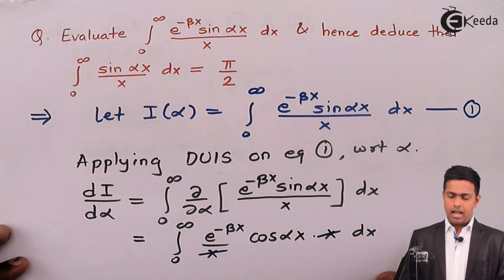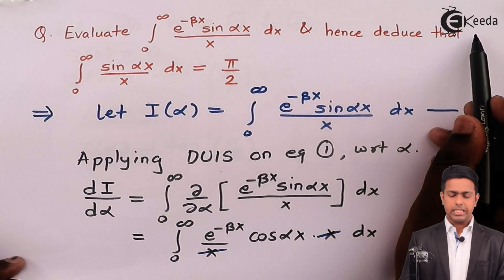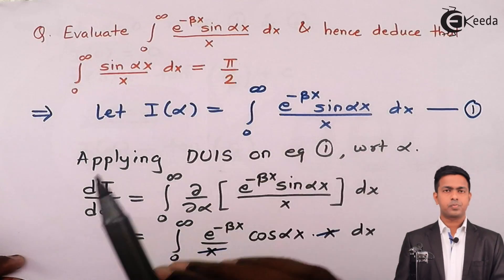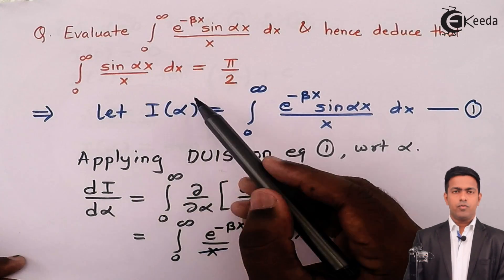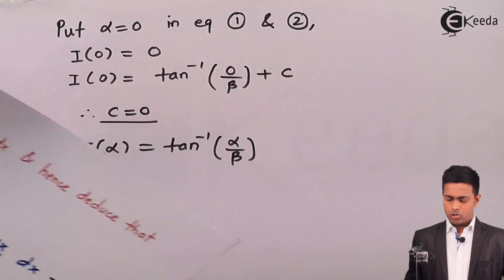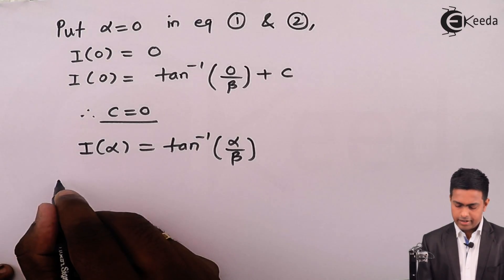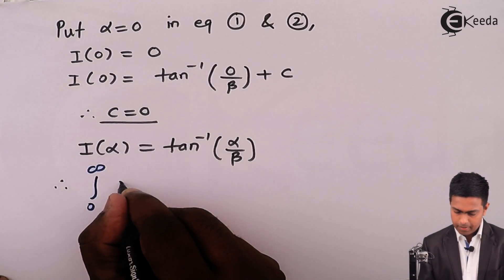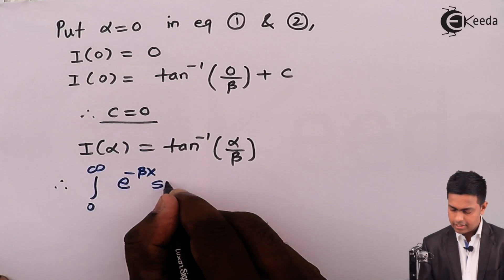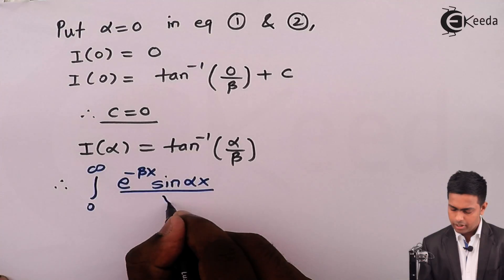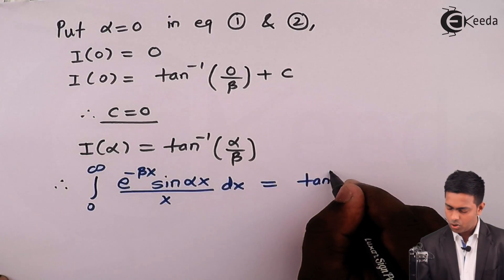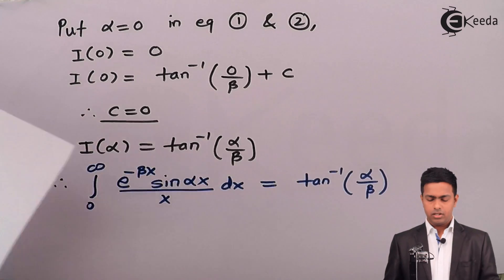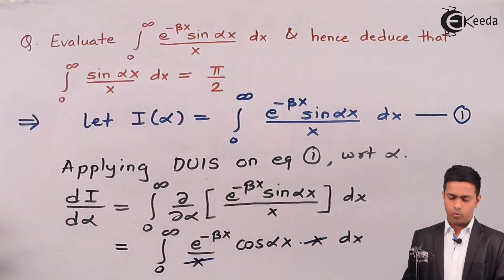We have now evaluated the integral using DUIS. Now we'll see the deduction: we need to prove that the integration from 0 to infinity of sin(alpha x) upon x dx equals pi by 2. To get this, we use the result proved above. Rewriting that result: the integration from 0 to infinity of e raised to minus beta x times sin(alpha x) upon x dx equals tan inverse of alpha by beta.